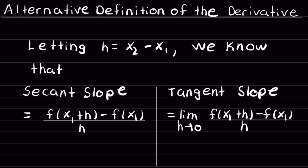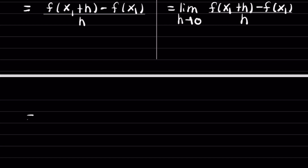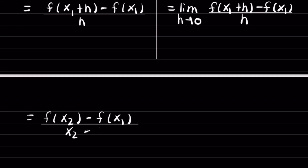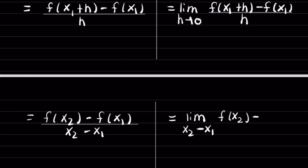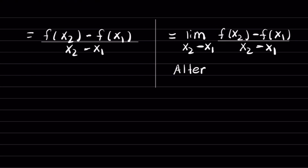And if we go back to the first way we wrote the secant slope, we also know that this is equal to f of x2 minus f of x1, all over x2 minus x1. So the equivalent tangent slope can be written as the limit as x2 approaches x1, of f of x2 minus f of x1, all over x2 minus x1. And this is the alternative definition of the derivative.